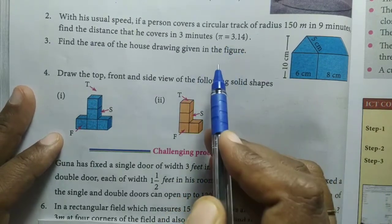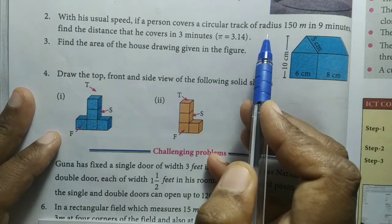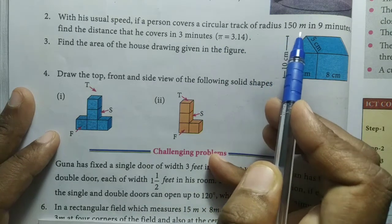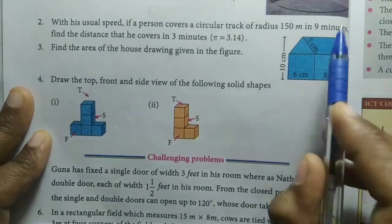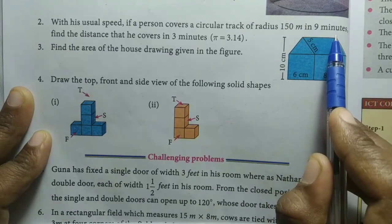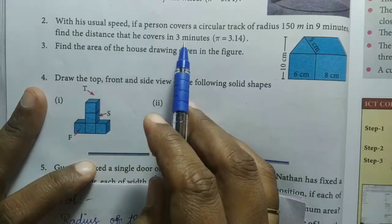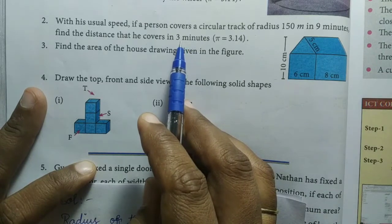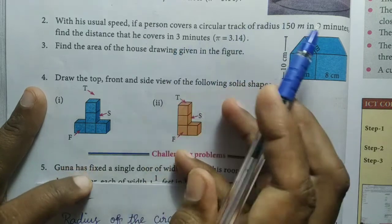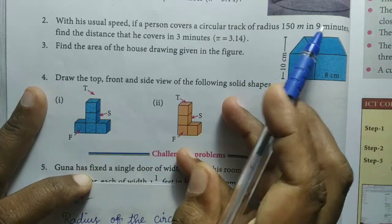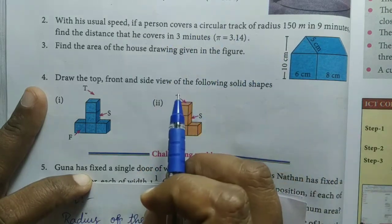So there is a person who has a circular path, a track with radius 150 meters. He covers the full track in 9 minutes, then we need to find the distance he covers in 3 minutes. Let's look at the given values and the solution.